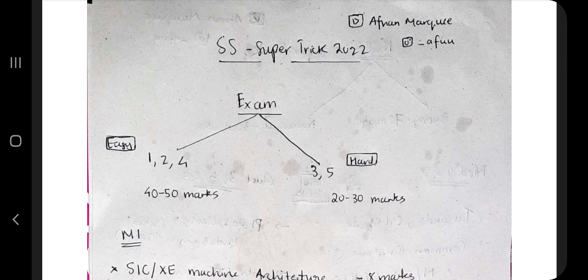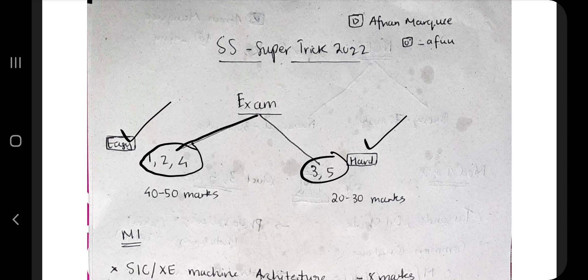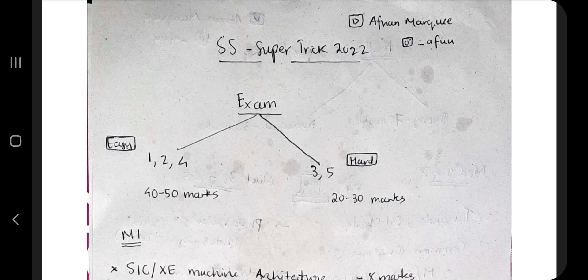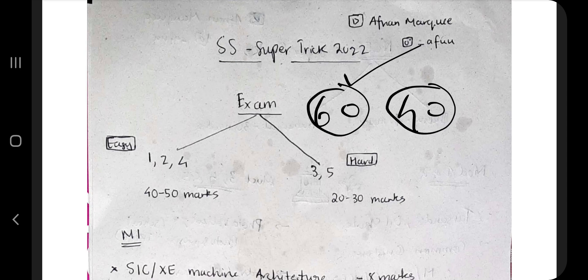There are two divisions: modules one to four which are very easy, and modules three and five which are very hard. In modules one, three, and five there are numericals — you have to generate object code, make graphs, and do shift-reduce parsing. In this video I am talking without those things. Theory marks will be around 60 marks, so if you study only the theory you can easily pass. There are totally around 15 to 16 questions in the theory where you can easily score marks.